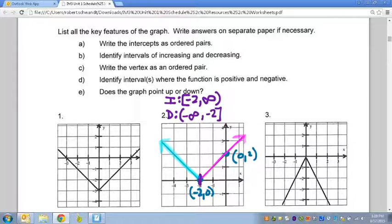The vertex as an ordered pair. Again, the vertex is that changing point where it goes from increasing to decreasing, which is right here at negative 2, 0. Great. Part D where it's positive and negative.